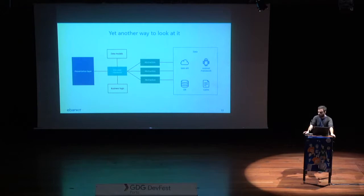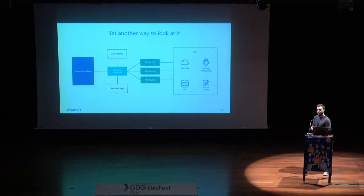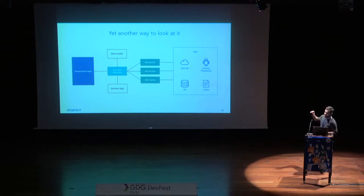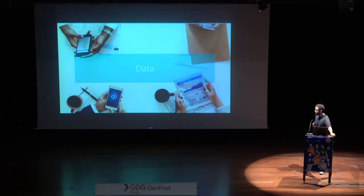Clean architecture comes with a concept called use cases. Use cases are pieces of logic that execute a certain use case of your system — they describe a feature that your system wants to do. They are contained in the domain layer, use the business logic, output data models, use abstractions from the data layer, and provide models to the presentation layer.